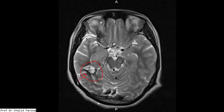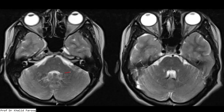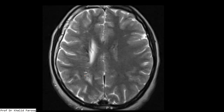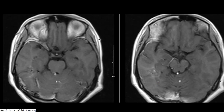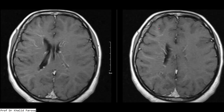Here we can also see multiple developmental venous anomalies which are deep in the supratentorial compartment, that is around the lateral ventricles. We can also see multiple venous angiomas involving both cerebellar hemispheres draining into the fourth ventricle. These venous angiomas are isolated in 75 percent of cases, but in 20 percent of cases they are associated with cavernous malformation, as we have seen in this case.